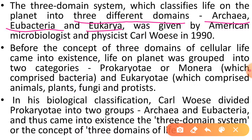Teen Domains mein: pehla domain Archaea hai, doosra domain Eubacteria hai, aur teesra domain Eukarya hai. Is Three Domains System of Life ko dene wale American Microbiologist and Physicist Carl Woese thay, jinhone 1990 mein is concept ko diya. Before the concept of Three Domains came into existence, life on planet Earth was grouped into two broad categories.